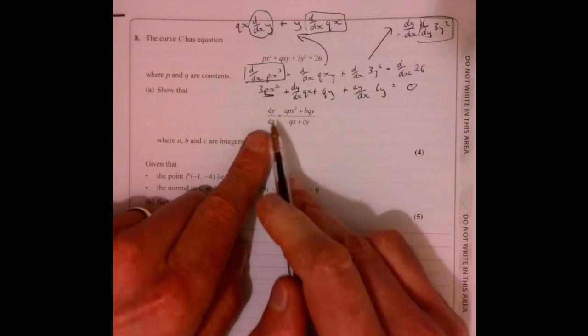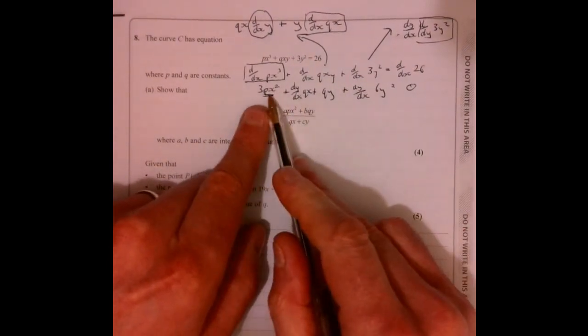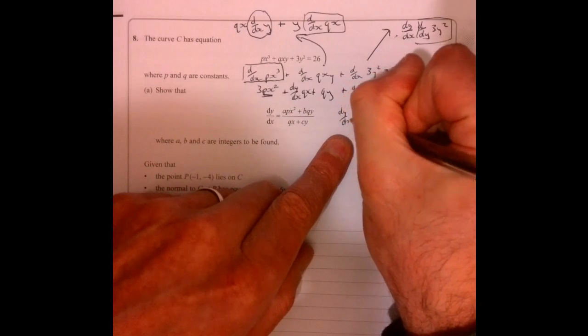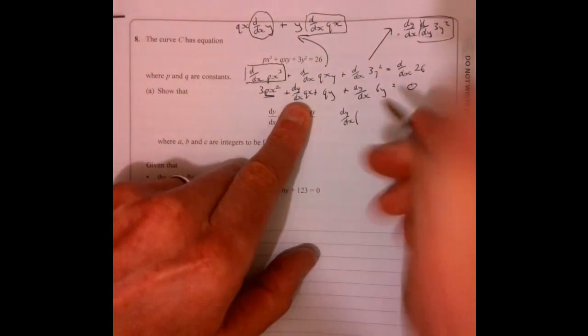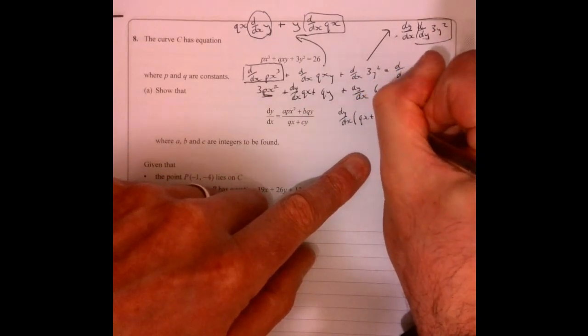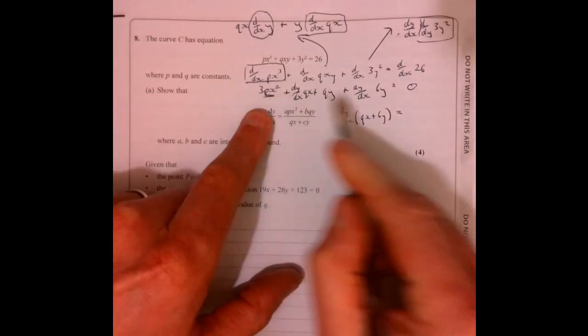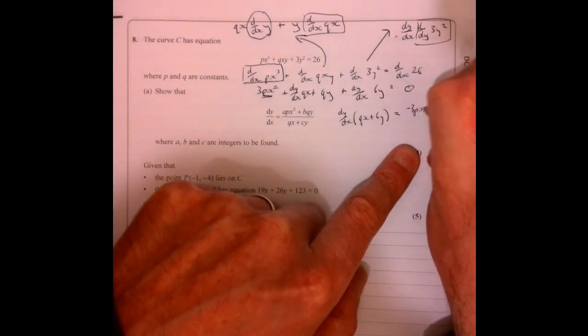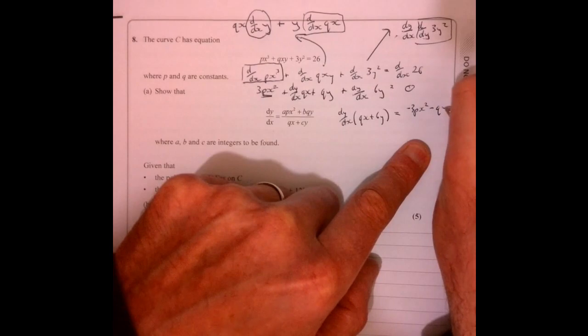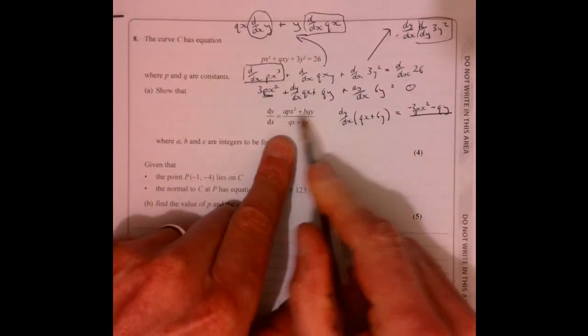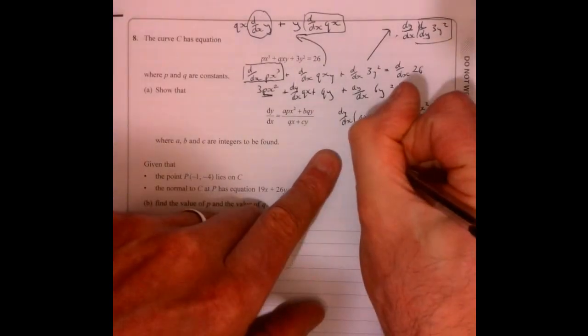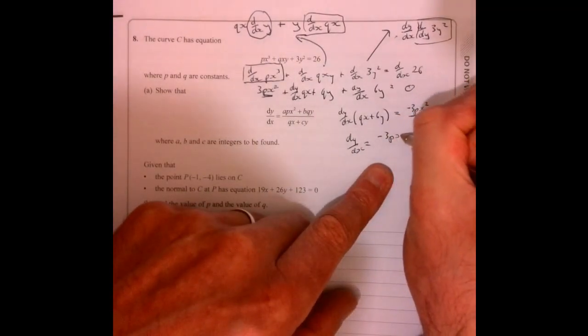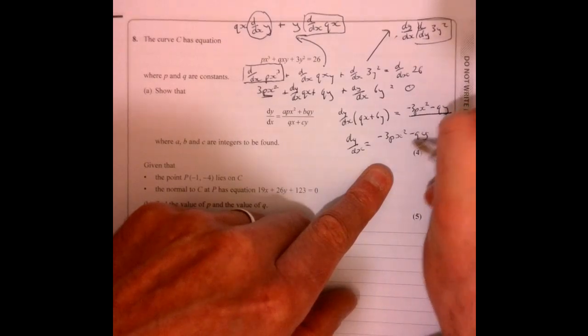Now I just need to make it look like this thing down here. I can factorize these guys, let's take them over onto the right hand side. So that gives me dy over dx multiplied by qx plus 6y, and then that's equal to minus this and minus this part just here as well, so minus 3px squared and minus qy.